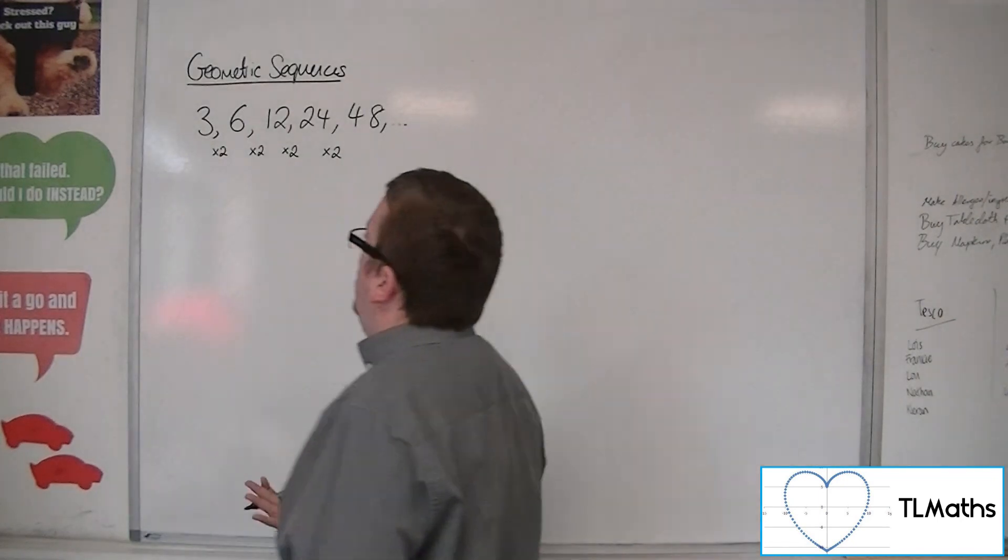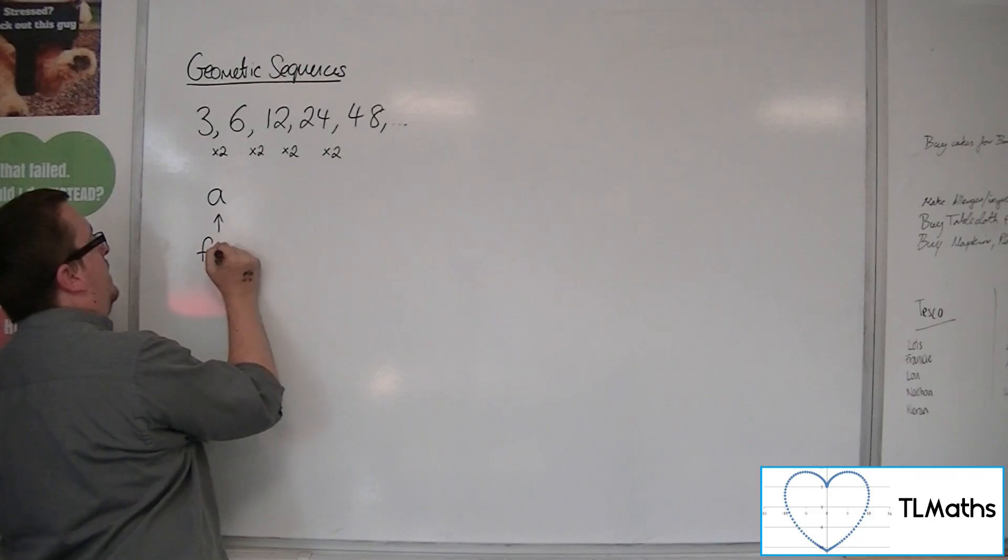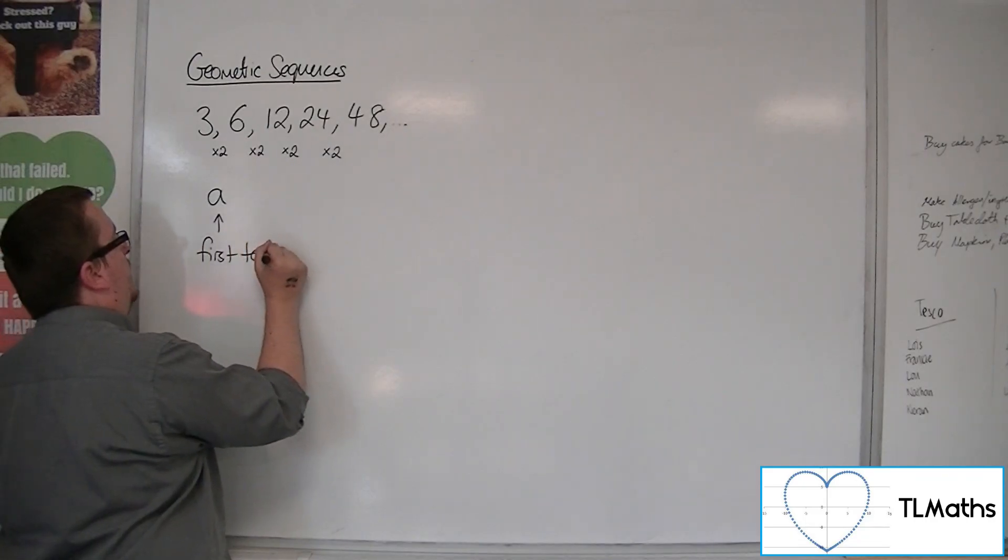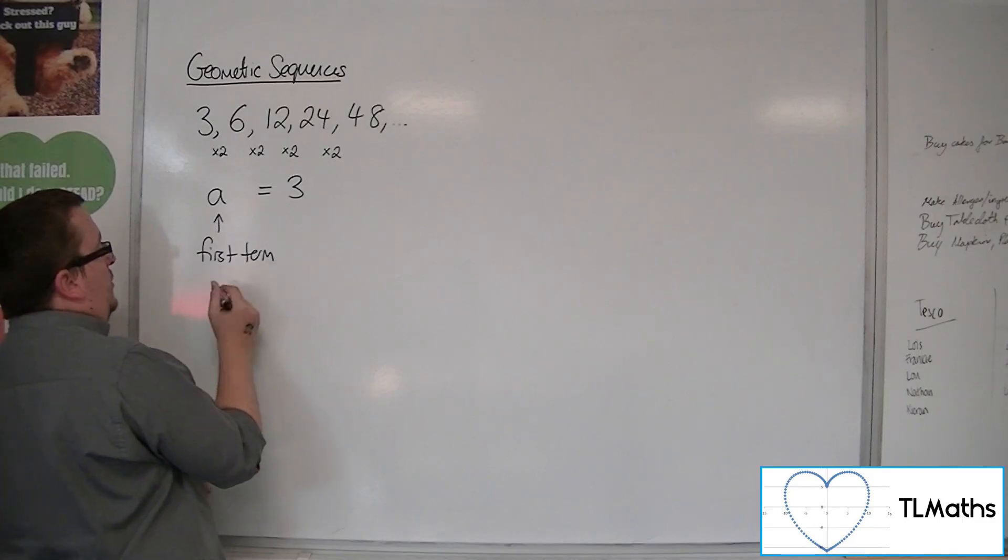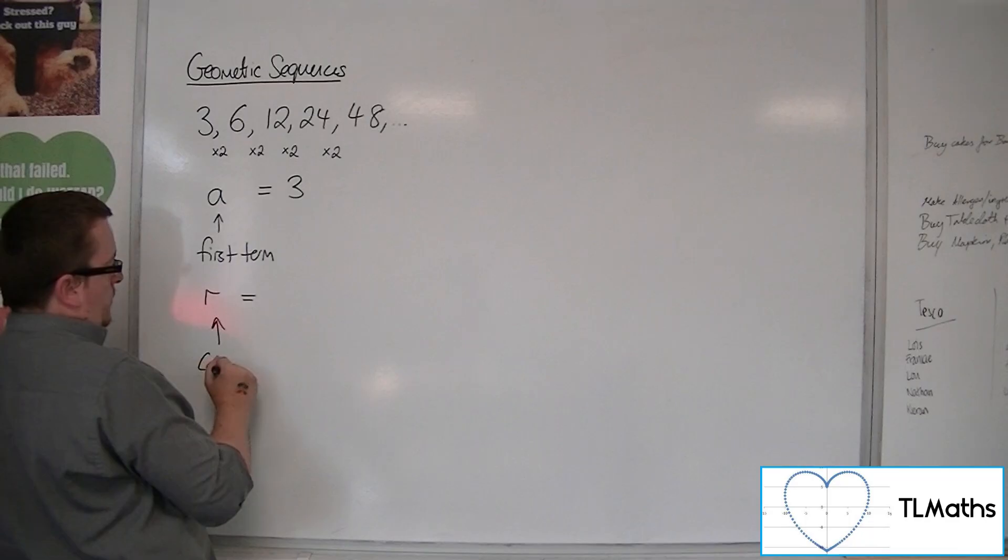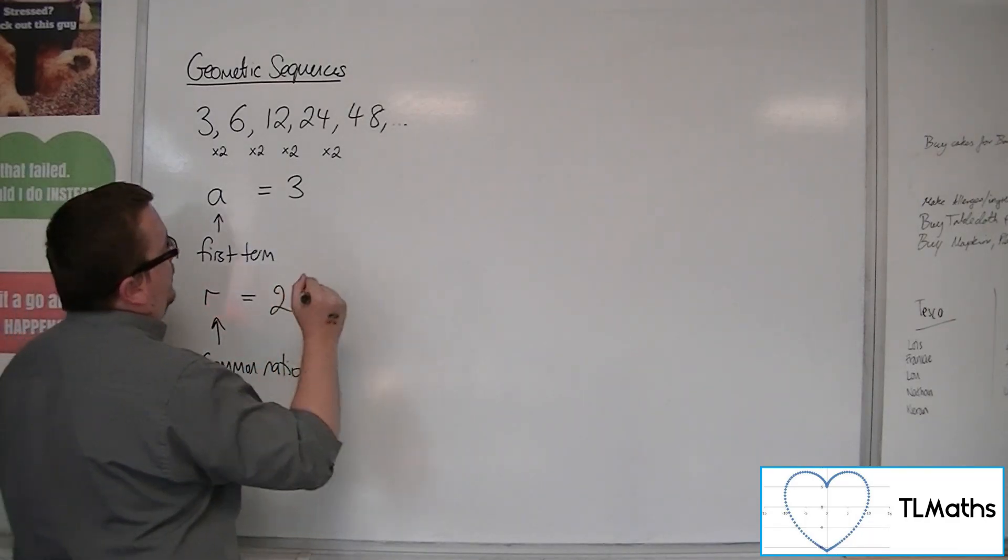We still have a representing the first term in the sequence, so in our case a is 3. And we now have this common ratio, r, which in this case, as we know, is 2.